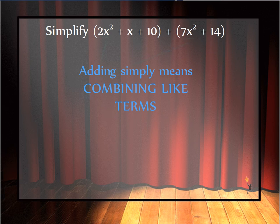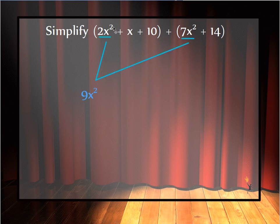The first set of like terms I have here are 2x squared and 7x squared. When you add like terms together, keep in mind that exponents never change in addition or subtraction, but coefficients can be combined. So this says I have 2x squareds. I'm adding 7 more x squareds. I have 9x squareds total.